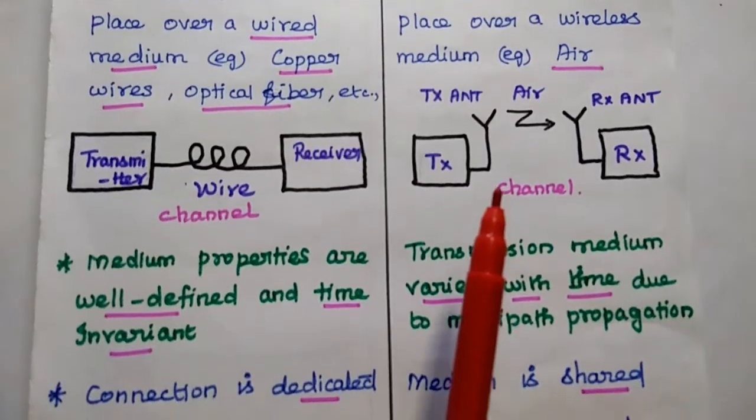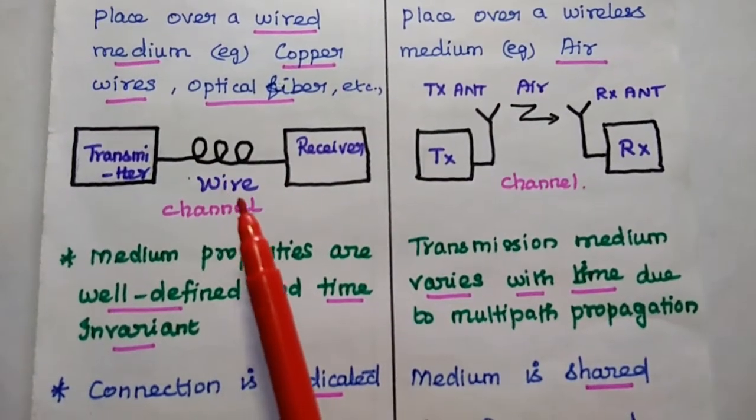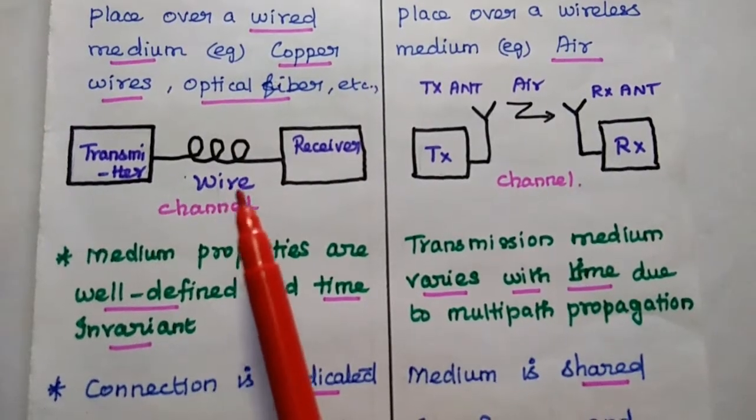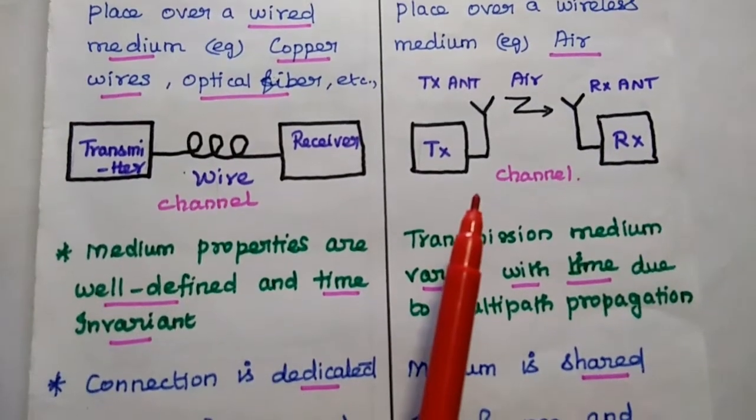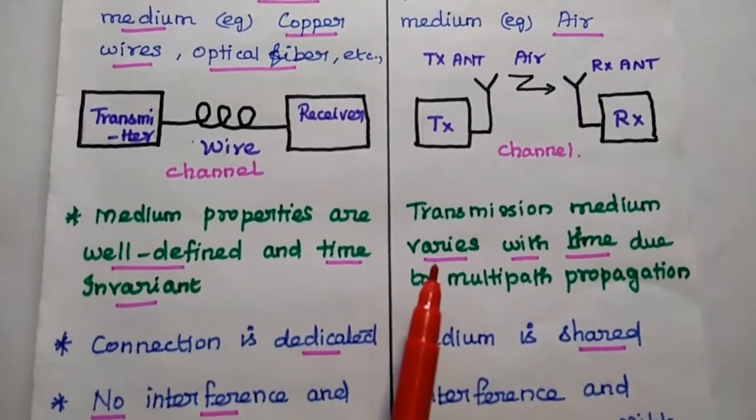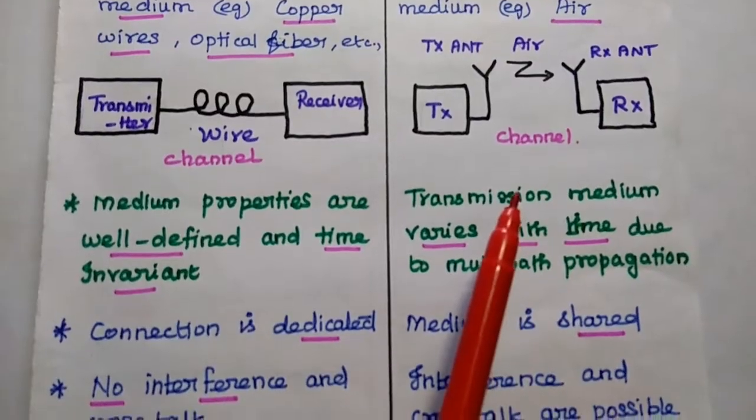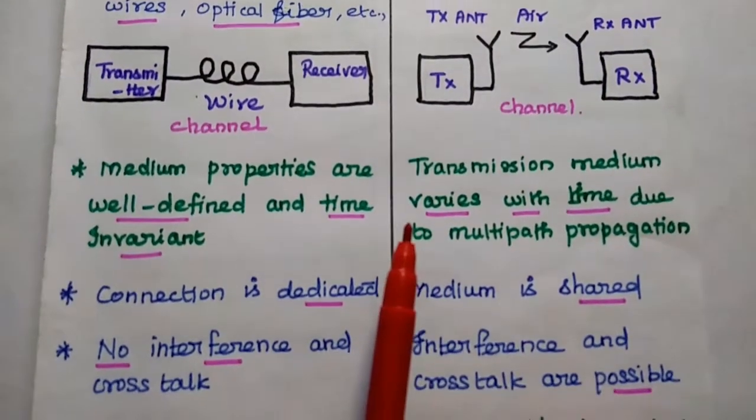Here the properties of the medium are well defined and time invariant because it is a wired connection. But in wireless, the transmission medium varies with time due to multipath propagation like reflection, diffraction and scattering.